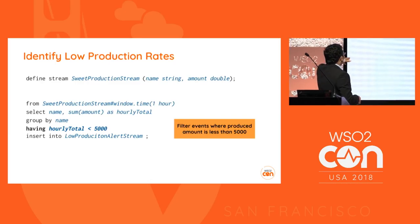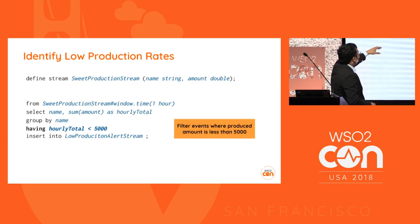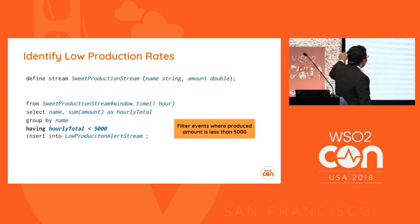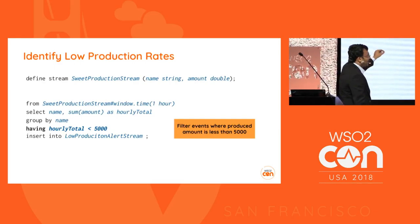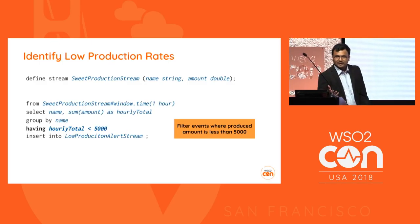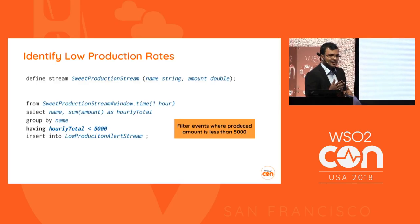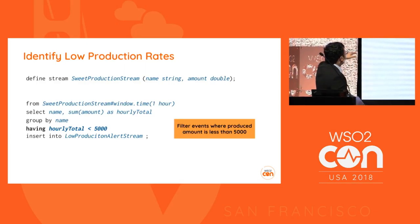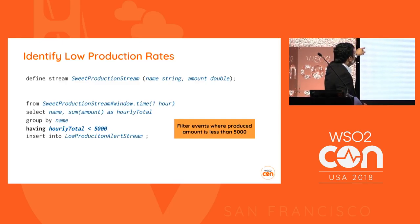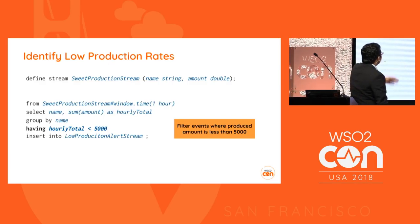After that we check whether the hourly total is less than 5,000. If it is, it's a low production amount for that product. We check for each product whether the hourly total is less than 5,000, and those events matching this condition are sent to another stream called low production stream.